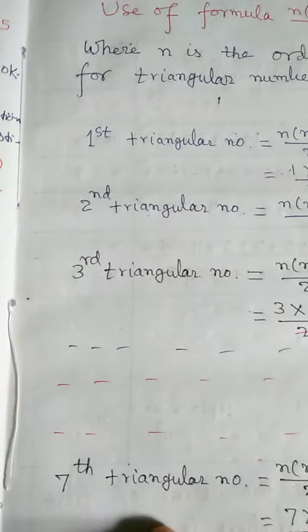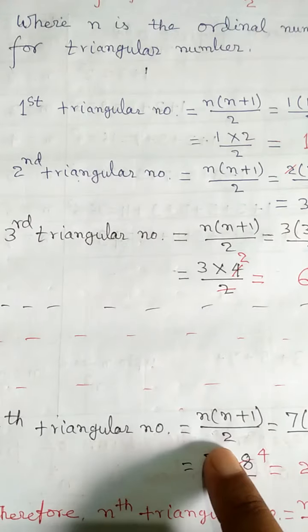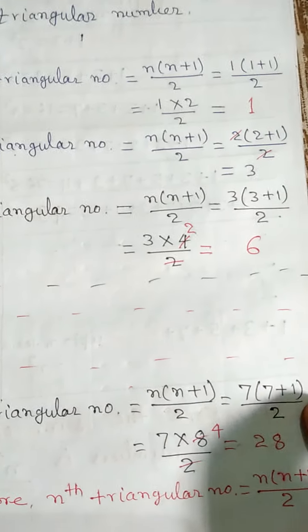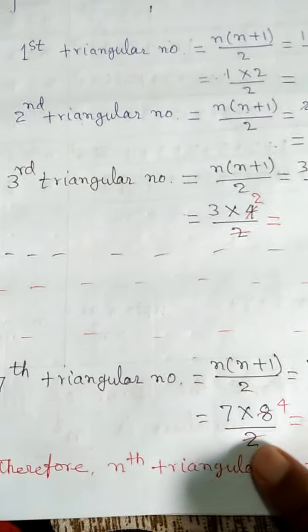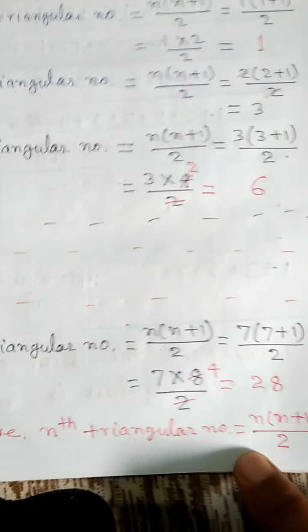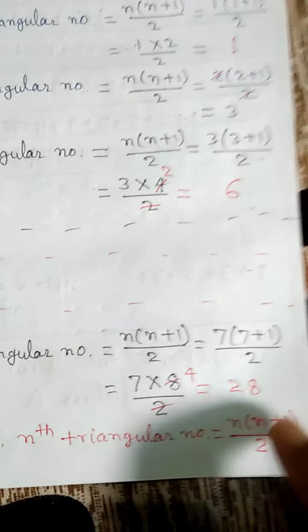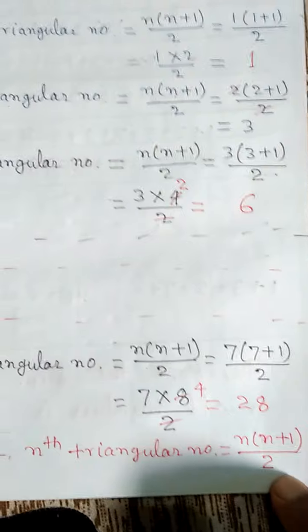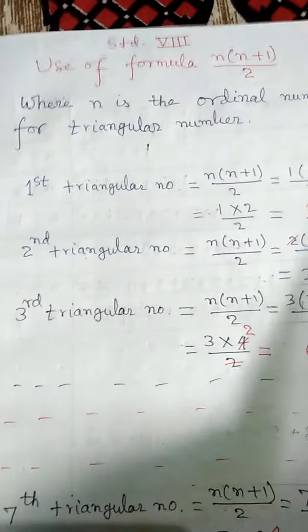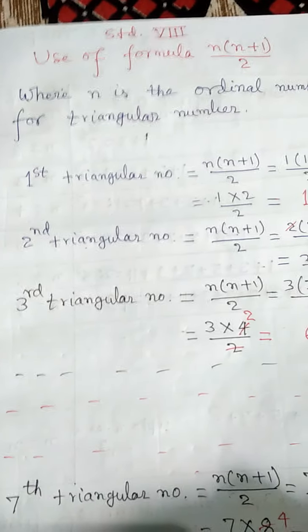Similarly, the seventh triangular number is equal to n(n+1)/2, which equals 7 into 7 plus 1 by 2, and finally we get 28. Therefore, the nth triangular number is equal to n(n+1)/2. In this way, we can find infinite triangular numbers.